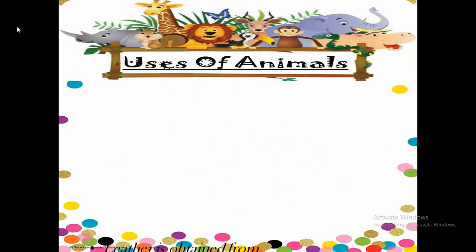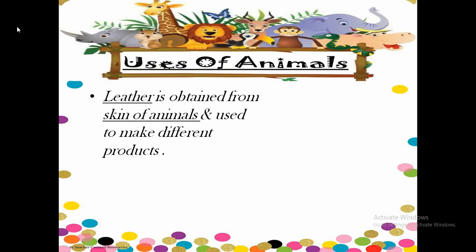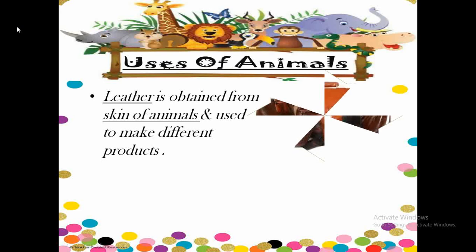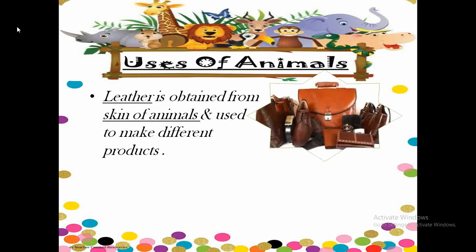Animals are very useful for humans because they provide varieties of goods and services. The first use: leather is obtained from the skin of animals and used to make different products. Children, you might have seen your parents using bags, belts, shoes, wallets, etc. All these things are made from leather, which is obtained from the skin of various animals like goat, cow, giraffe, lion, etc.